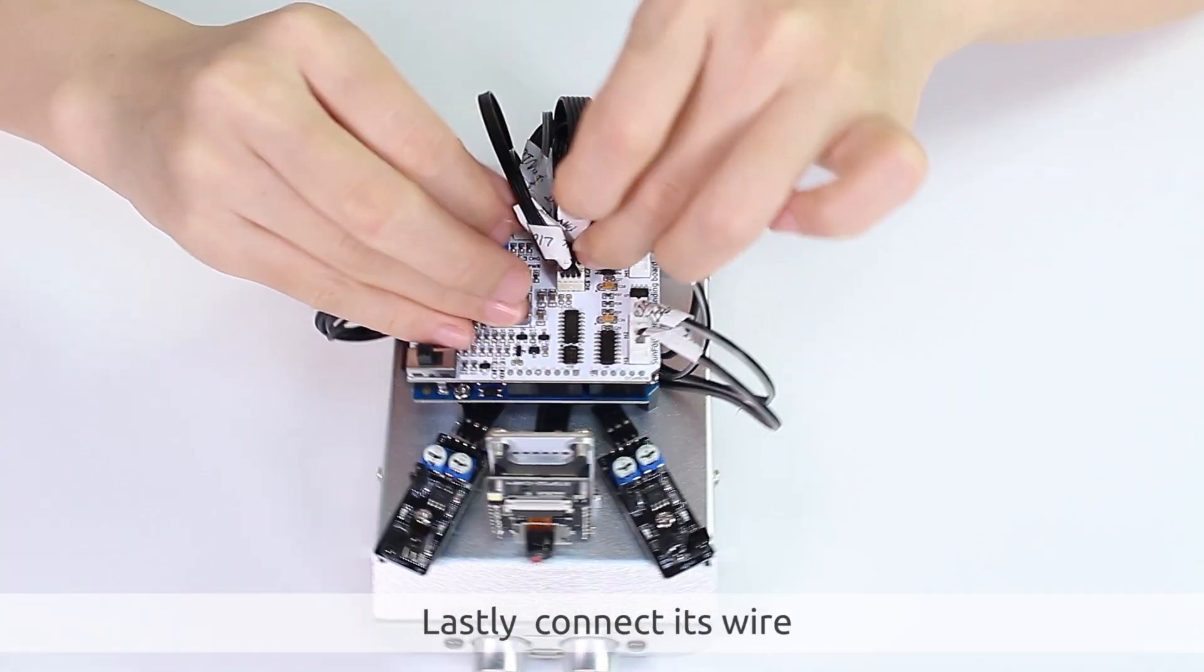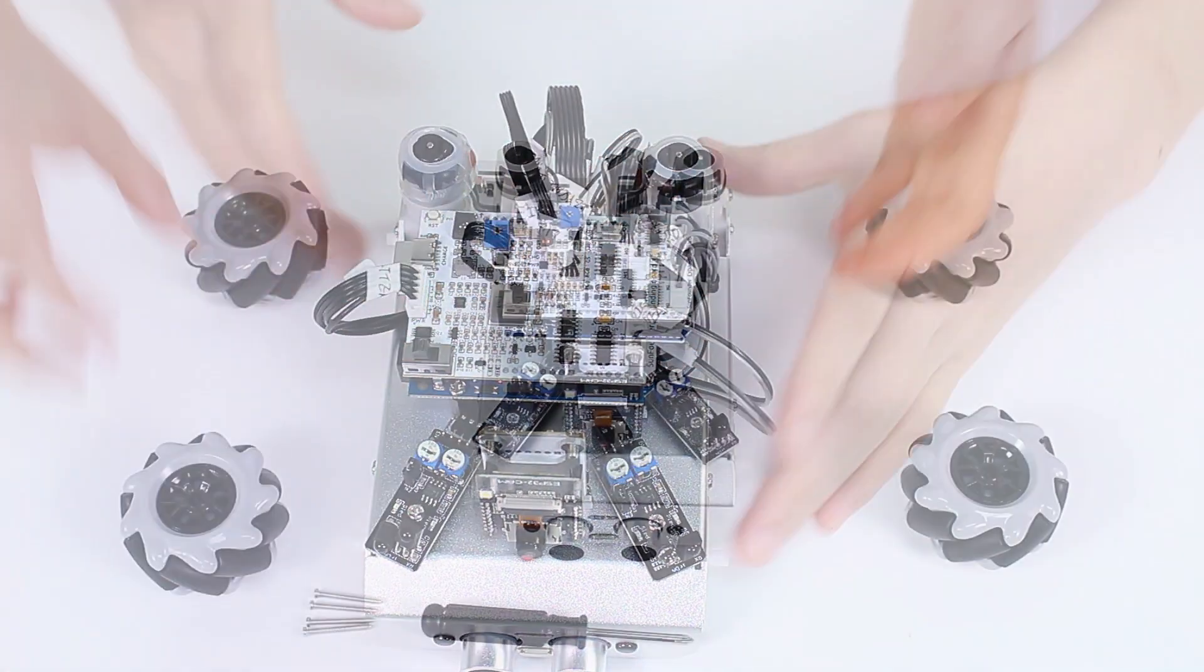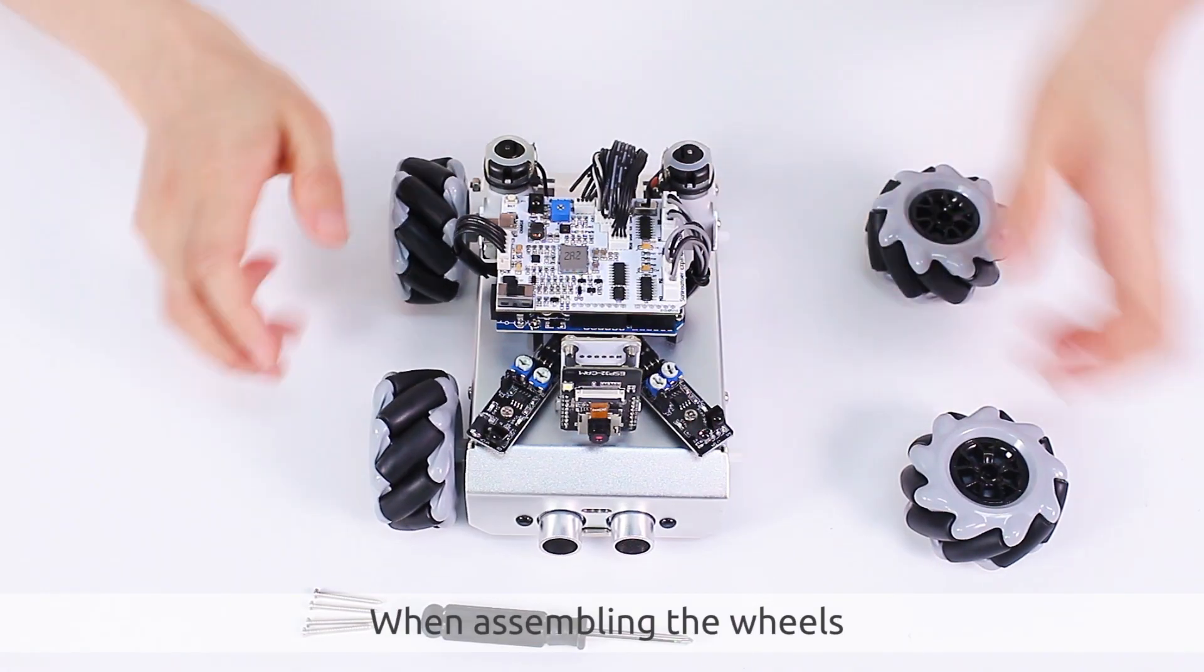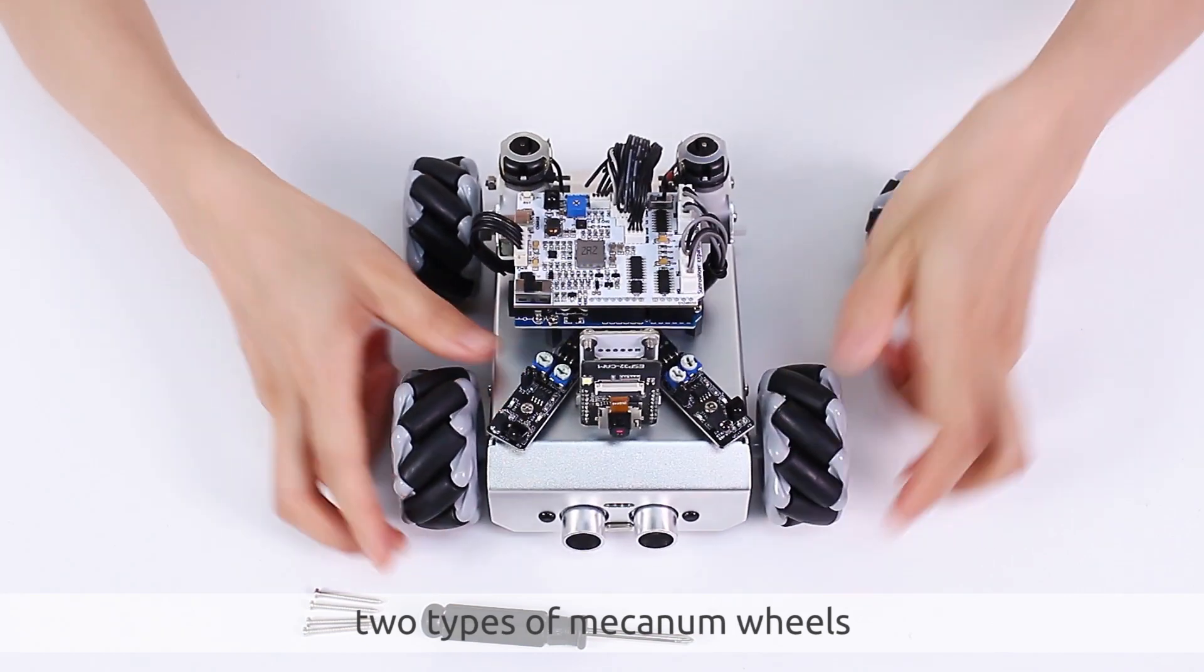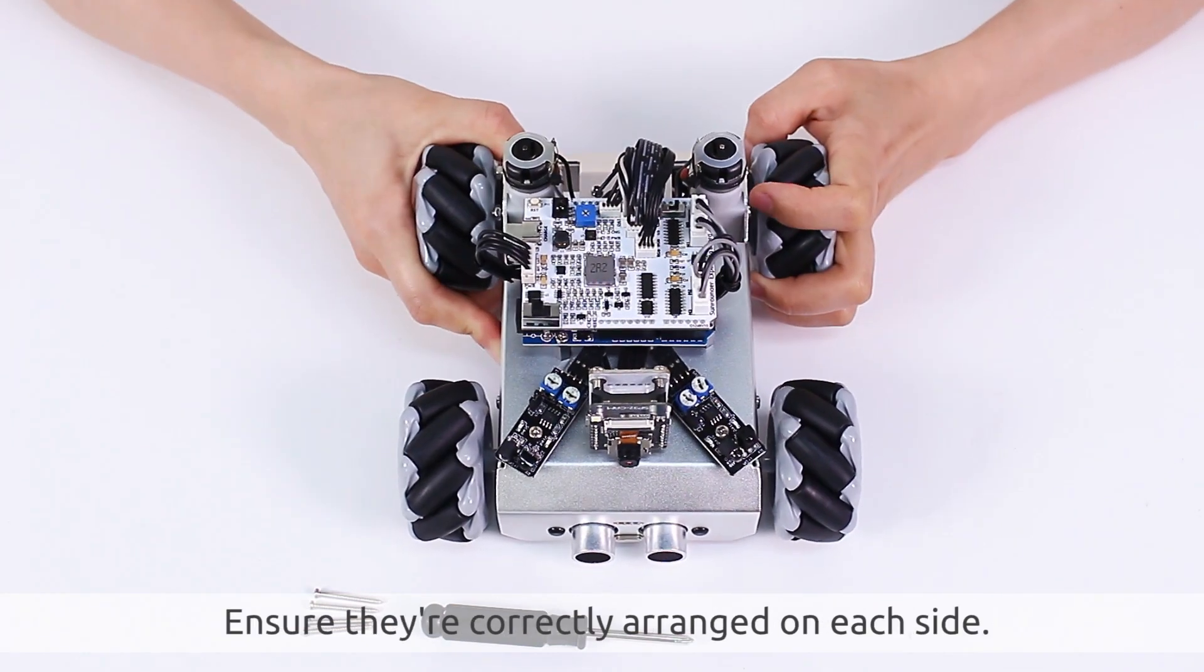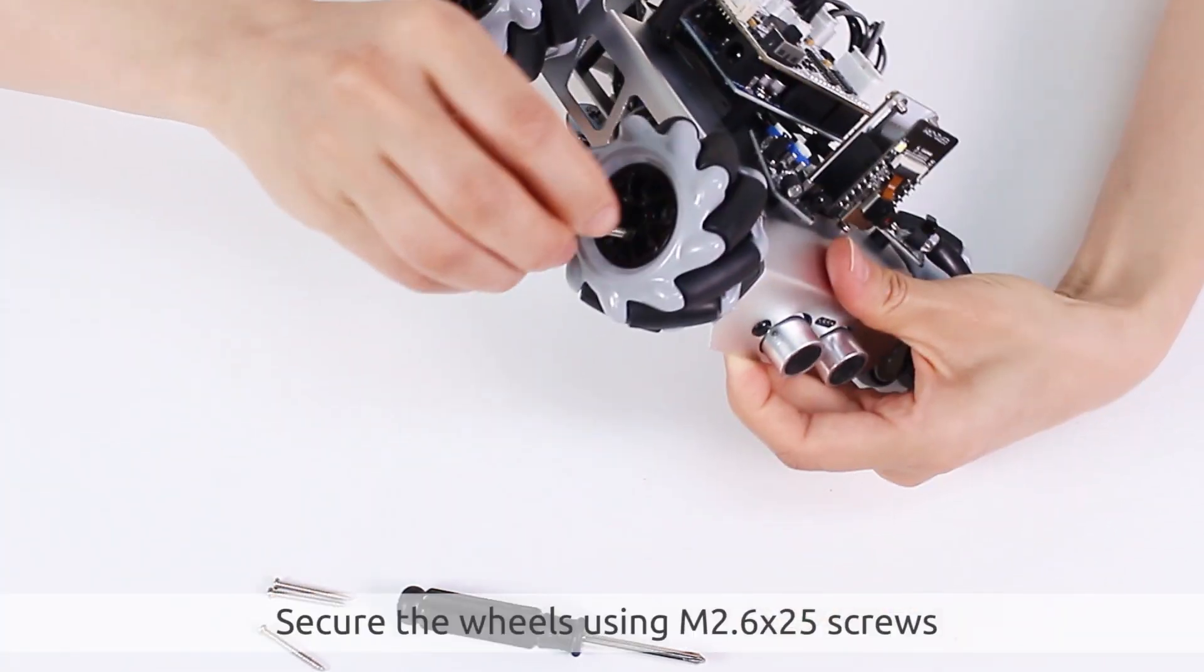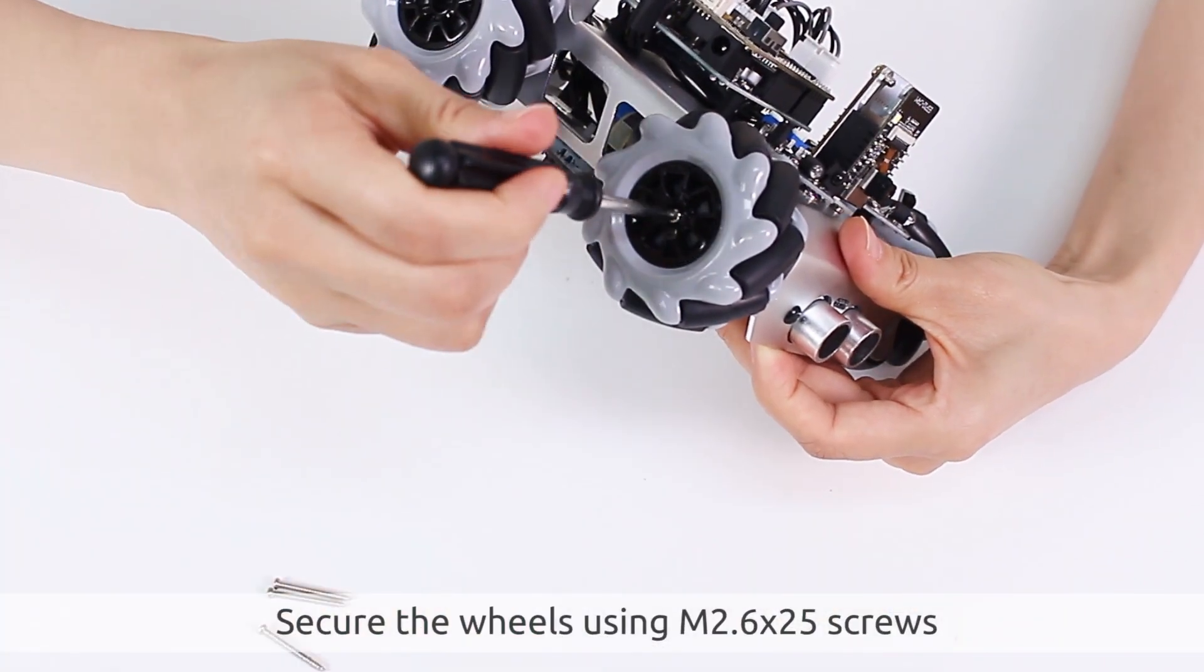Lastly, connect its wire. When assembling the wheels, remember there are two types of mecanum wheels. Ensure they're correctly arranged on each side. Secure the wheels using M2.6 by 25 screws.